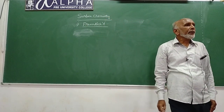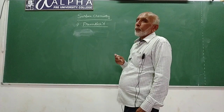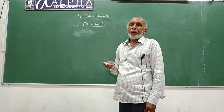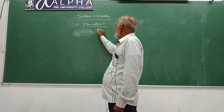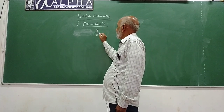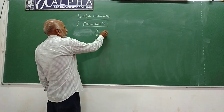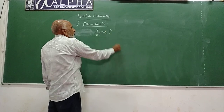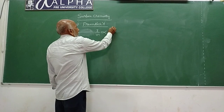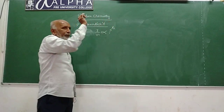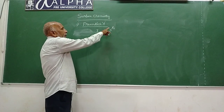The Freundlich adsorption isotherm holds good only at low pressure. It states that the rate of adsorption, or amount of adsorption x by m, is directly proportional to the equilibrium pressure of adsorption raised to the power 1 by n. That is, x by m is proportional to p to the power 1 by n.